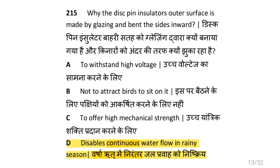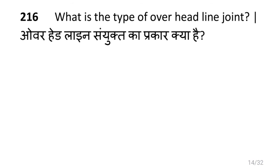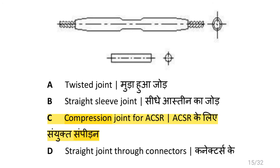Why is the disc pin insulator's outer surface made by glazing and bent with the side inward? That is it disables continuous water flow in rainy season. What is the type of overhead line joint? That is compression joint for ACSR.